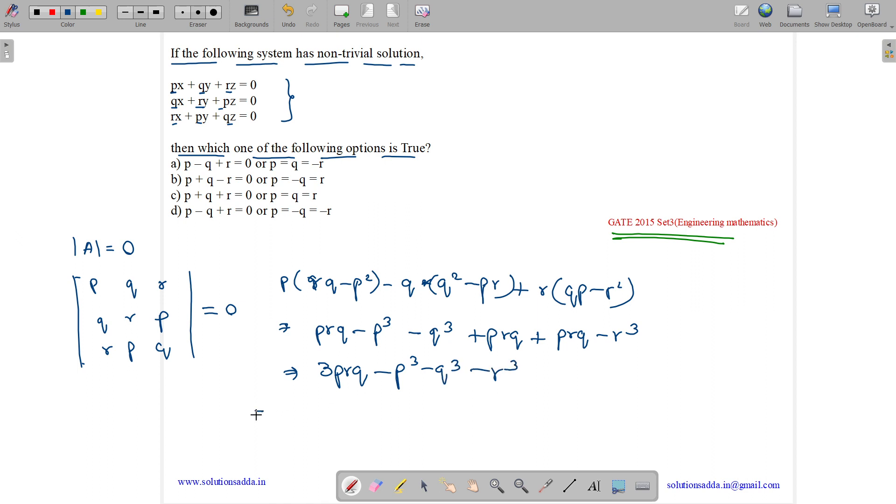We can write this as minus P plus Q plus R whole cube, plus three times P plus Q plus R into PQ plus QR plus PR, using the identity A plus B plus C whole cube.